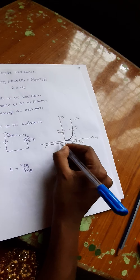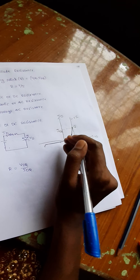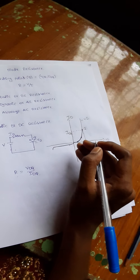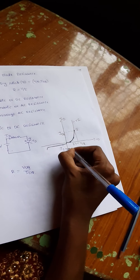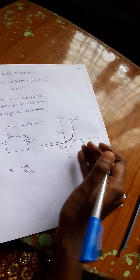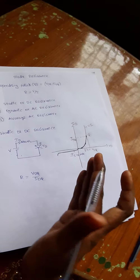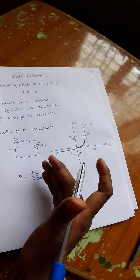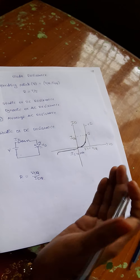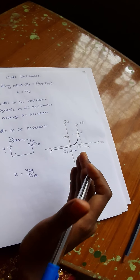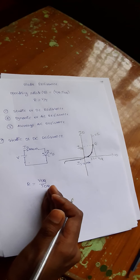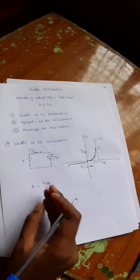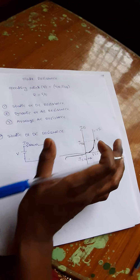For reverse bias in a PN junction diode, current flows only through minority carriers, so the current is simply in the range of microamps. Since the current is a very low value, the resistance across the diode is very high under reverse bias. For this reason we have a very low value of current — resistance and current are inversely proportional to each other.